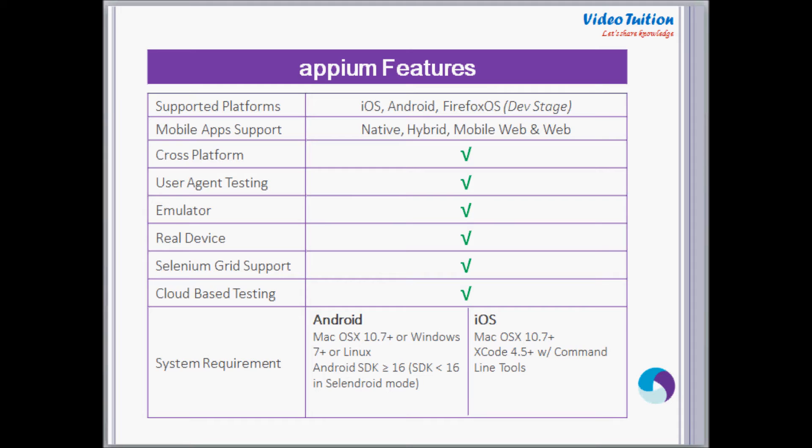Appium also supports automating web applications in mobile Safari on iOS and Chrome on Android. Appium can be used on emulators and real devices. It can be integrated as a node into the Selenium Grid for scaling and parallel testing. One of the main features of Appium is its capabilities to test mobile applications in a cloud-based setup, which is usually provided only by costly licensed automation testing tools.